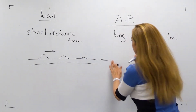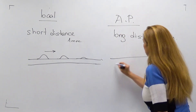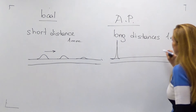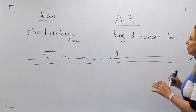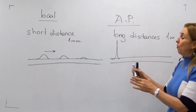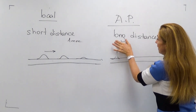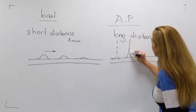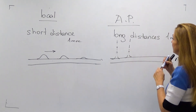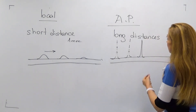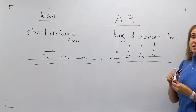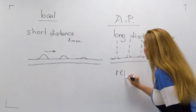Action potentials, by contrast, can move very long distances — up to one meter. The trick is that the original action potential doesn't simply travel; as it fades, a new action potential is formed next to it, and then another, repeating in sequence. This way, the action potential can move long distances by regenerating itself.